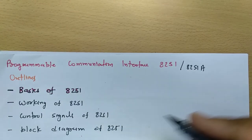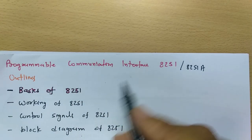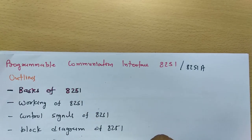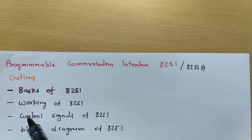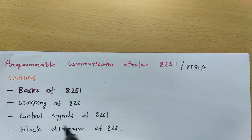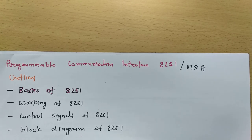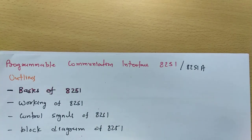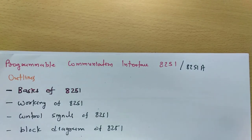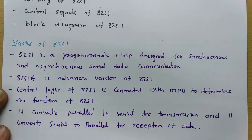So in this session, to explain the Programmable Communication Interface IC, these are my session outlines: first I'll explain basics of 8251, then working of 8251, then control signals in 8251, then the block diagram, and finally how transmission and reception happen in 8251. Let us begin with the basics of 8251.